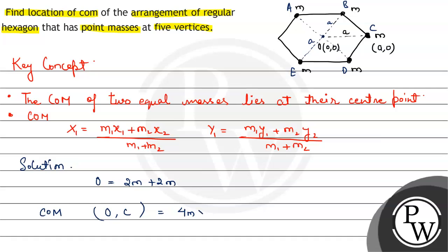Which will be 4m, the mass of O, into its x coordinate which is 0, plus m, the mass of C, into its x coordinate which is a. The denominator comes out to be 4m plus m, hence it is equal to ma/(5m).